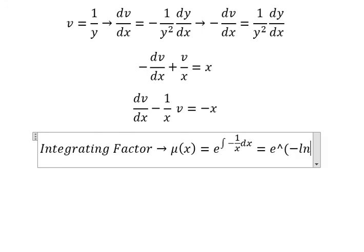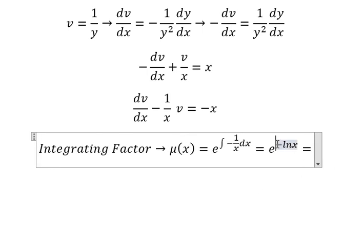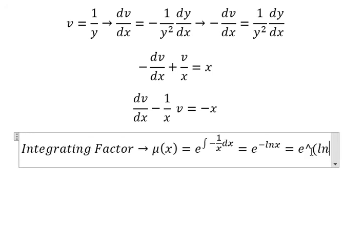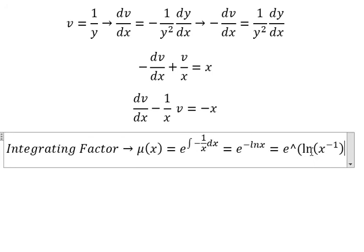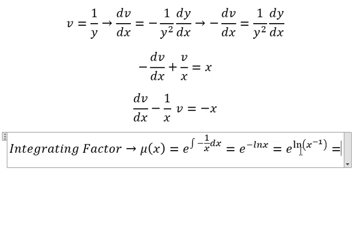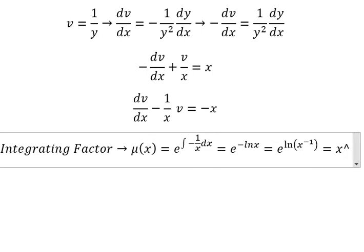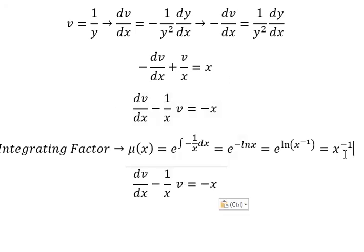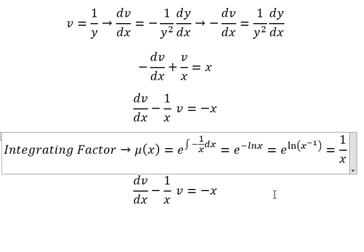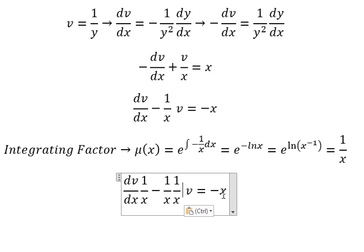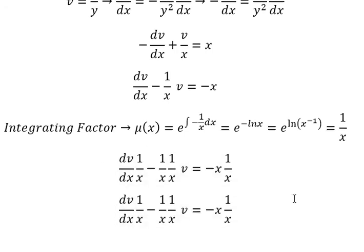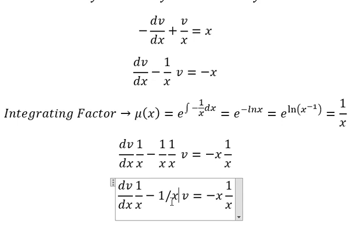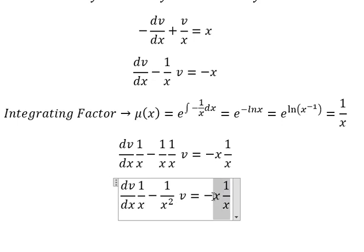The integral of 1 over x gives negative ln of x. The negative sign can go inside the natural log, so we get e to the power of ln of x to the negative 1, which we can write as 1 over x. That means we multiply both sides by 1 over x, and x divided by x gives 1.